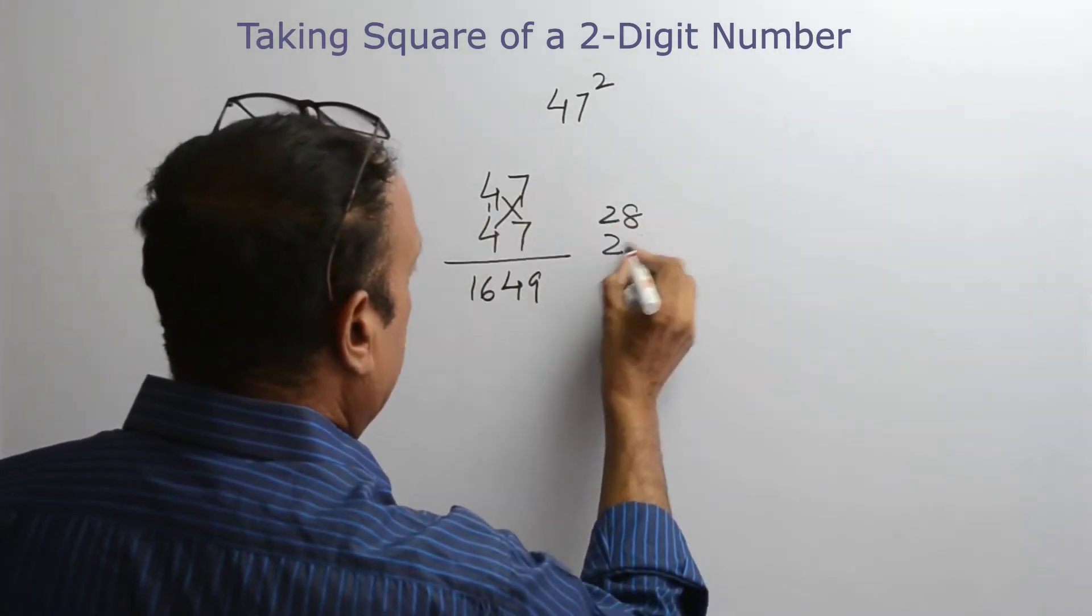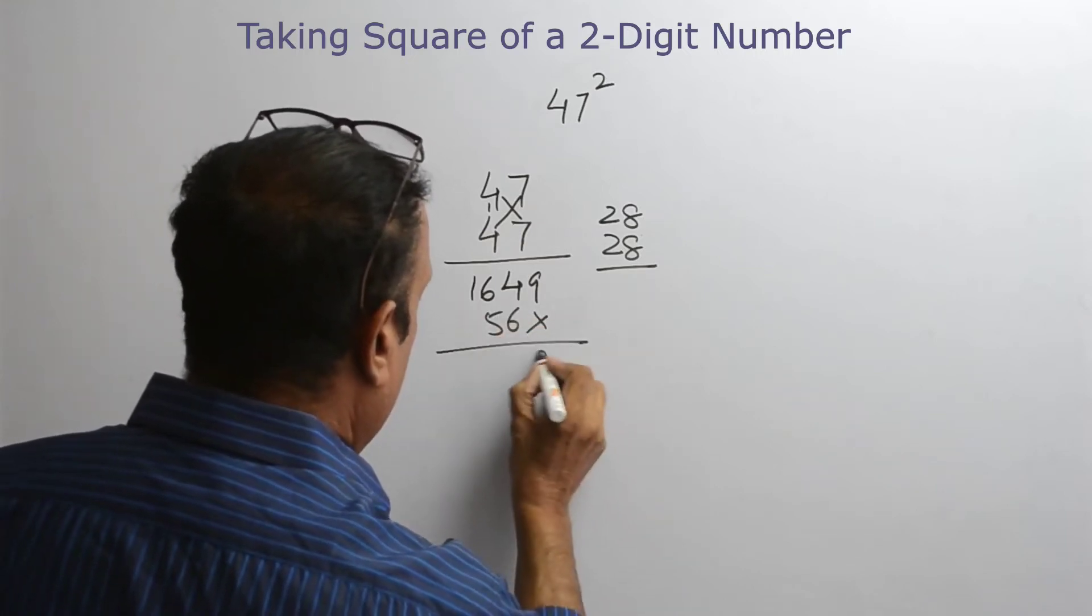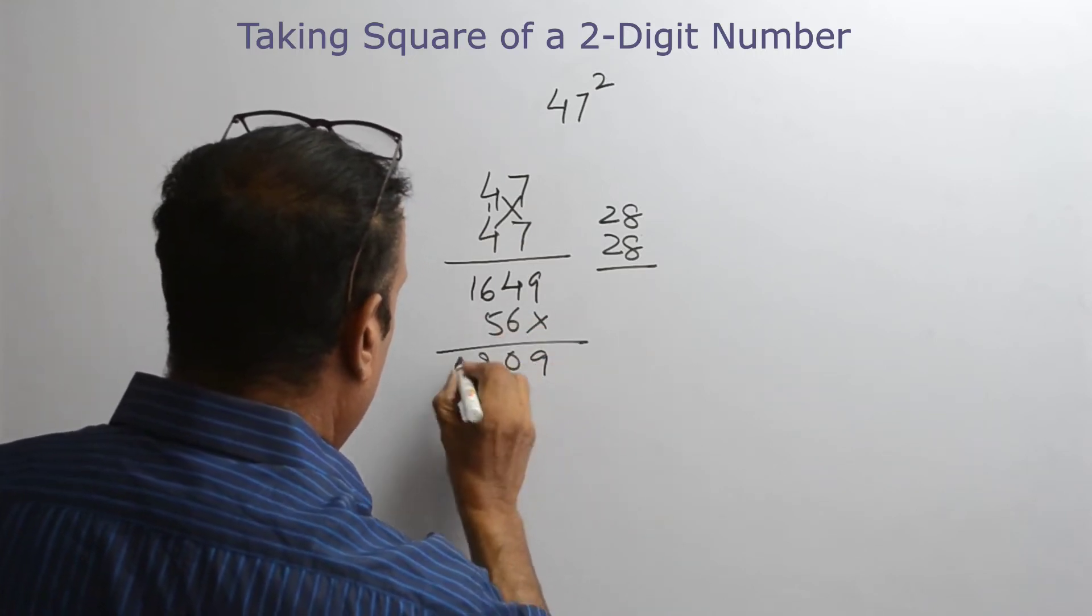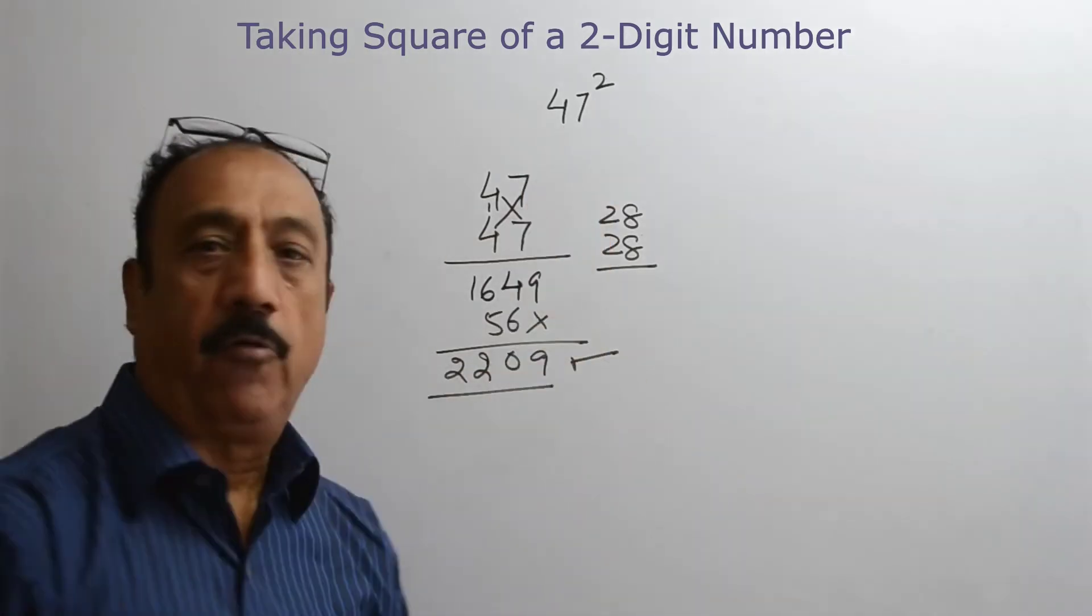4 by 7, 28, so 56. Put a cross over here and total it up, so 2209 is the square of 47.